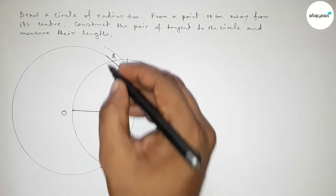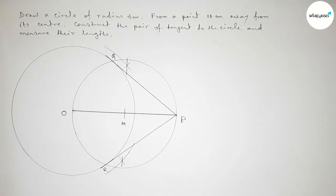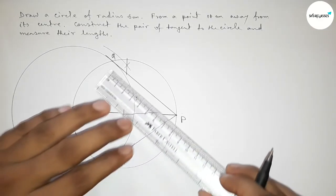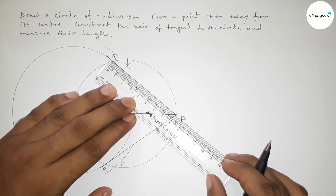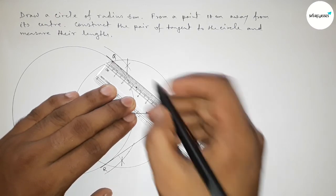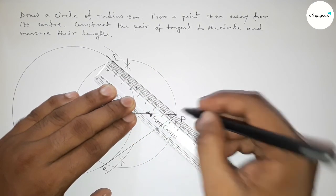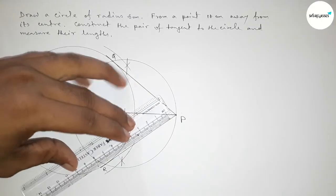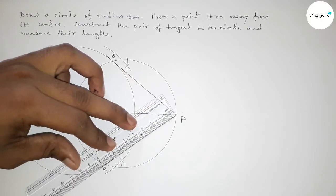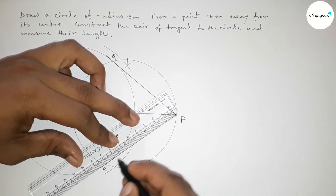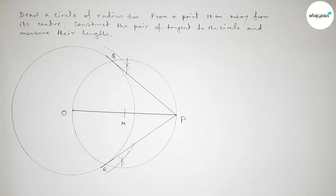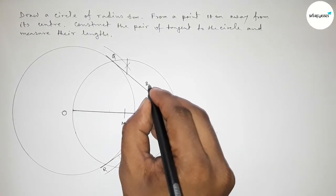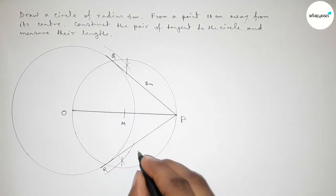The new circle meets the original circle at two points. Joining P to each intersection point gives us the two tangents from point P to the circle. These intersection points are labeled Q and R, so PQ and PR are the two tangents.